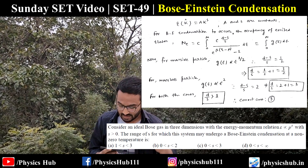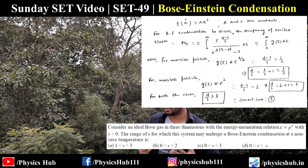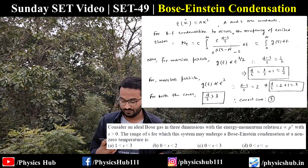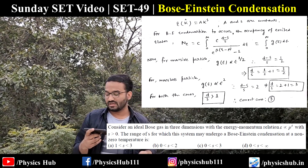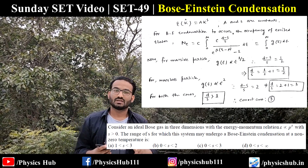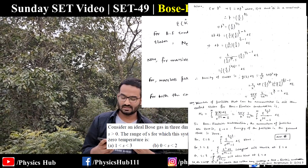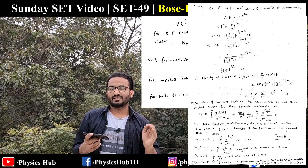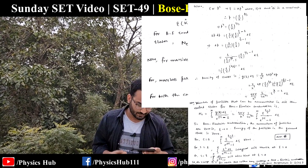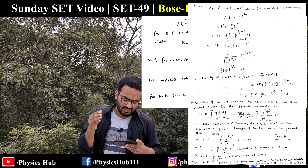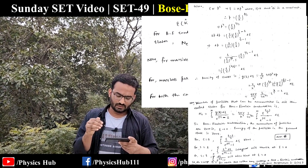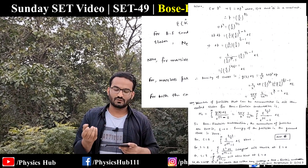Last question: consider an ideal Bose gas in three dimensions with energy-momentum relation E ∝ k^s, with s > 0. The range of s for which the system may undergo Bose-Einstein condensation at non-zero temperature is? Energy is given as E = a·k^s, so we can write p = (E/a)^(1/s), and p² = (E/a)^(2/s). This leads to calculation of dp and subsequently the density of states g(E).